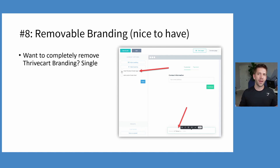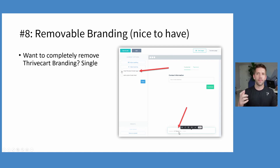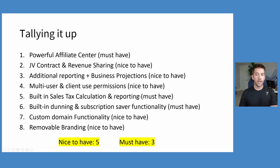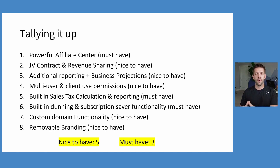Lastly, number eight: removable branding. Nice-to-have. Basically, when you're designing your cart, you can choose to show "ThriveCart copyright 2021" — or whatever the case may be — or you can click a single checkbox and it can be removed. Tallying it all up across all eight features, five of them I'm calling nice-to-have and three of them are must-haves. So the question becomes: what should you get?